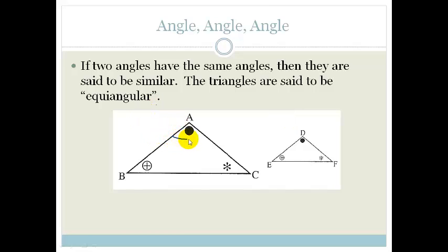If, for example, we've got this angle here, A is equal to that angle there, D. This angle B is an open circle with a little cross and this little angle E is also an open circle with a little cross and angle C is angle F.